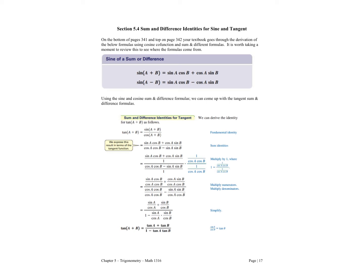In this section we are going to look at some sum and difference formulas, but today for sine and tangent. At the bottom of page 431 and the top of 432 in your textbook, it derives the sine sum and difference formulas, which are right here in this outlined yellow box. You can read them and look over them. I would like to write them one time for you.